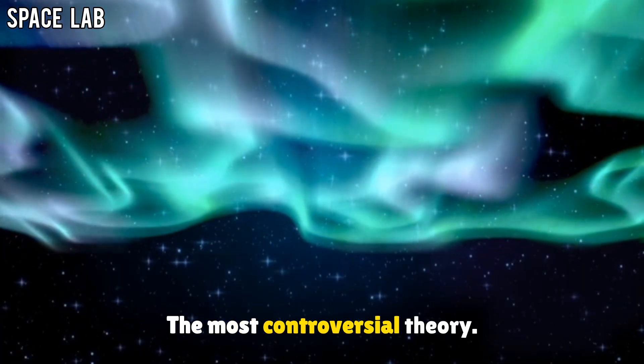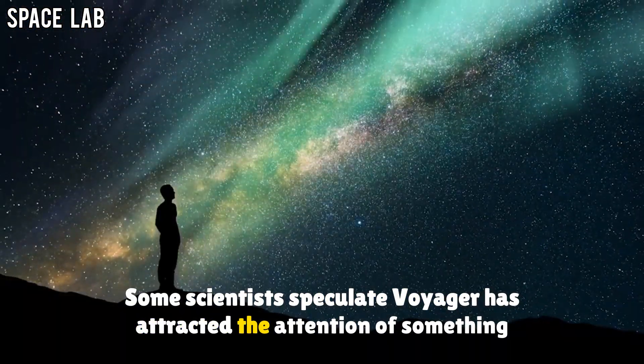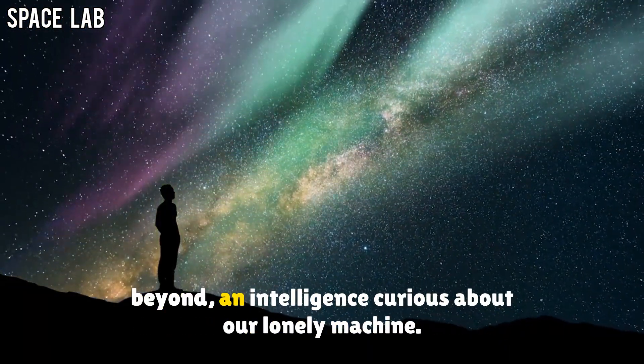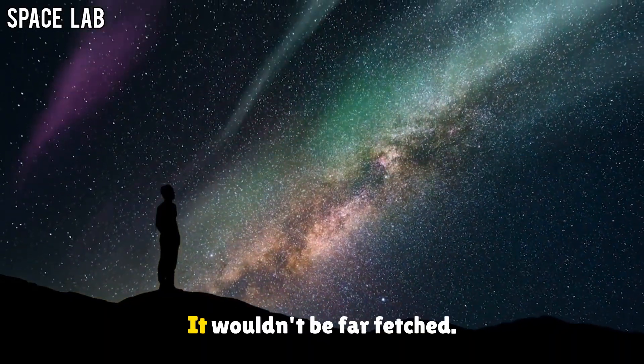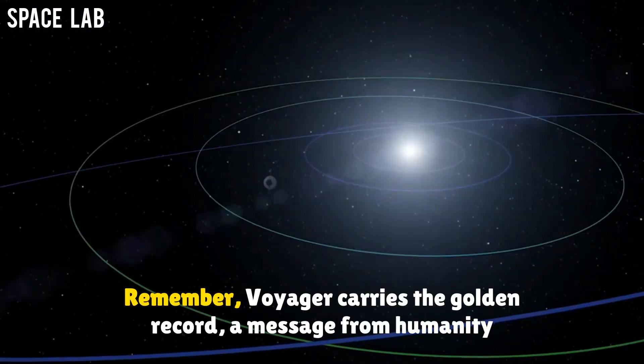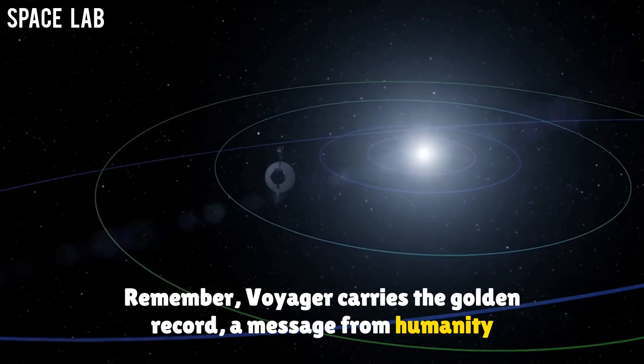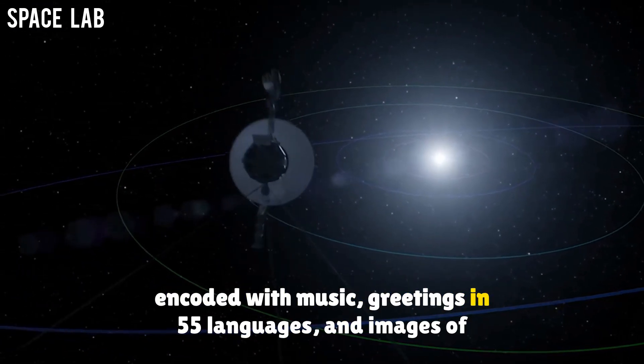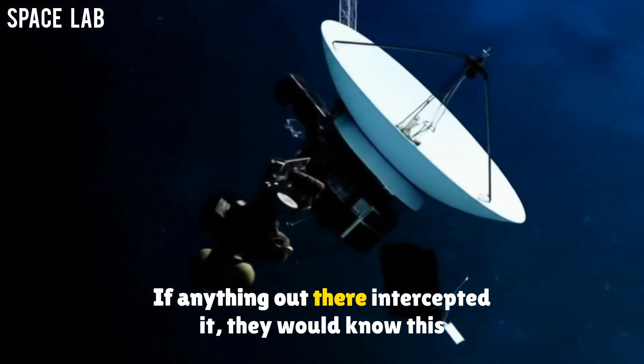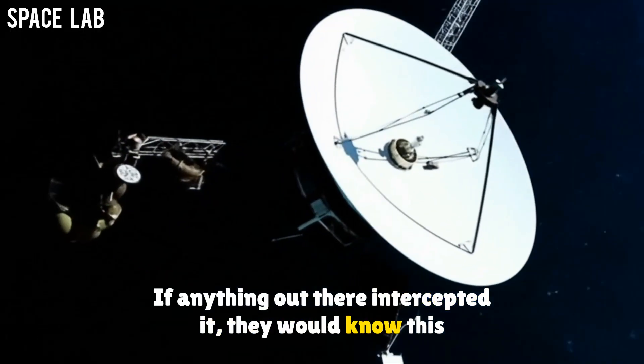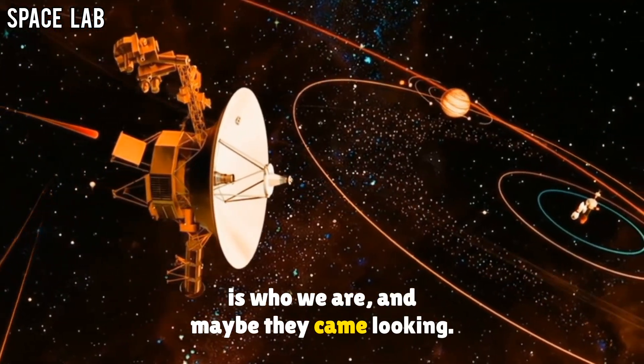An alien probe? The most controversial theory. Some scientists speculate Voyager has attracted the attention of something beyond, an intelligence curious about our lonely machine. It wouldn't be far-fetched. Remember, Voyager carries the golden record, a message from humanity, encoded with music, greetings in 55 languages, and images of Earth. If anything out there intercepted it, they would know. This is who we are. And maybe, they came looking.